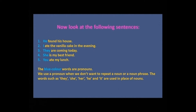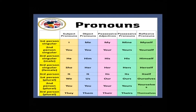The blue words in those sentences are pronouns. Now look at the pronoun chart. First person singular: subject form — I; object form — me; possessive adjective — my; possessive pronoun — mine; reflexive pronoun — myself. Second person: subject/object — you; possessive adjective — your; possessive pronoun — yours; reflexive pronoun — yourself. Third person singular male: subject — he; object — him; possessive adjective/pronoun — his; reflexive — himself.